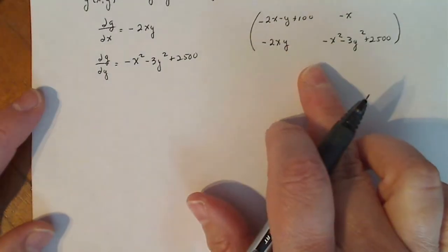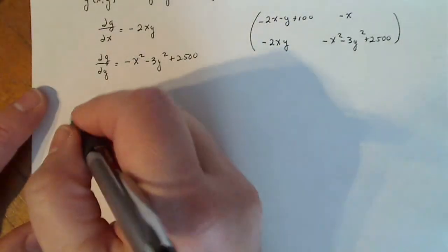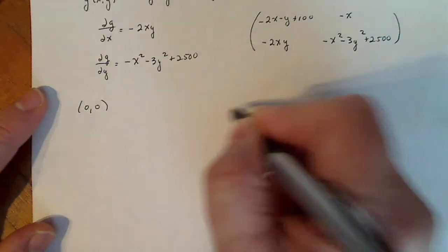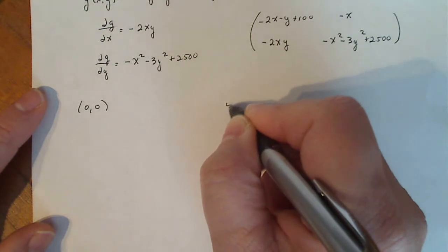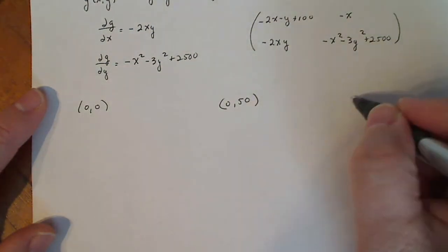So what we're going to do is we're going to take our three equilibrium points, plug it into our Jacobian, look at the characteristic polynomial, and determine its classification. So the three ordered pairs I got in the previous video were (0,0), (0,50), and (100,0).